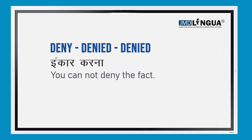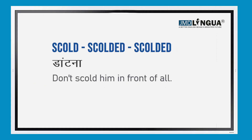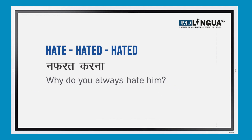Next verb is 'scold' — the meaning of scold is 'datna'. For example: don't scold him in front of all. Next verb is 'hate' — the meaning of hate is 'nafrat karna'. For example: why do you always hate him?